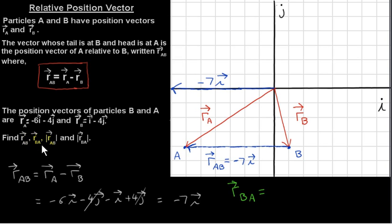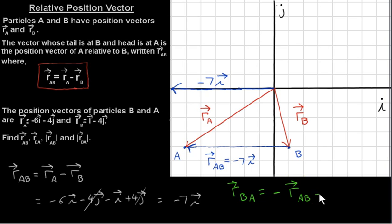Now let's find vector RBA — the position vector of particle B relative to A. The tail of RBA will be at A and the head at B. So it's obtained by reversing vector RAB. We negate minus 7I, just change its sign, and we get plus 7I.